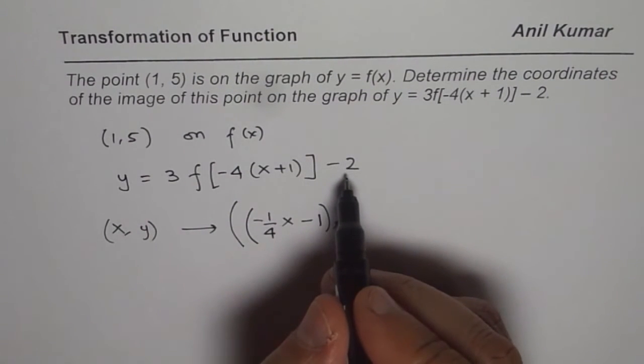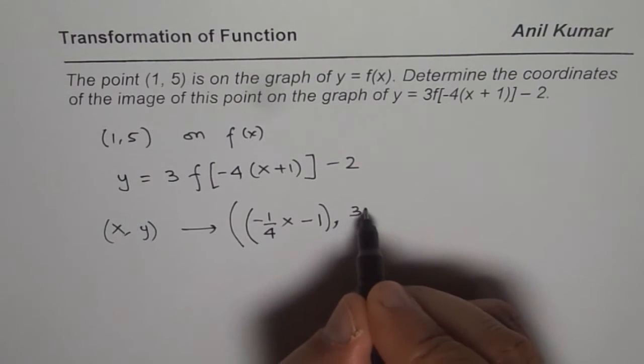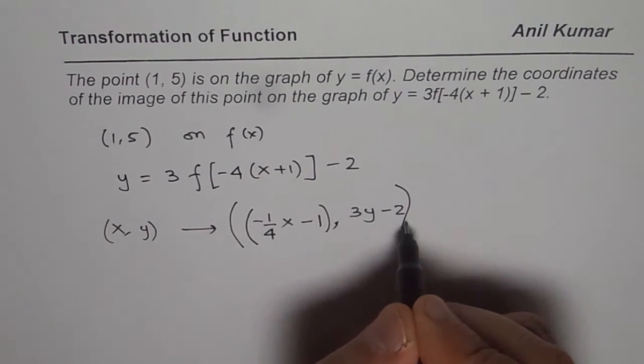As far as the y values are concerned, they will be multiplied by 3, so we get 3y, and then minus 2. That is the change.